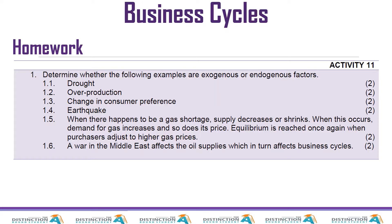I gave you homework in the previous lesson, so I want us to start by revising. The question says: determine whether the following examples are exogenous or endogenous factors of business cycles. As we all know, business cycles are successive periods of fluctuations in economic activity.